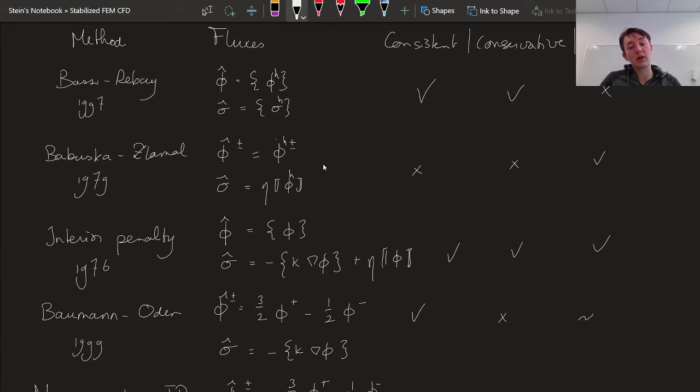So that is still conservative, or sorry, this is still consistent. If I have, if I plug my true solution in here, then there's not going to be a jump, and I get that the numerical flux phi is going to be equal to the true phi, so that's consistent. But we get a jump. If I have my numerical flux not equal on either side of the interface, I get a jump, so that makes this non-conservative.